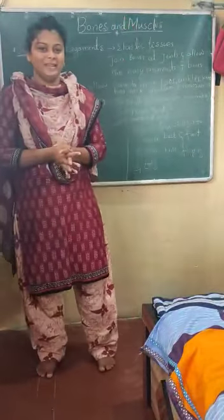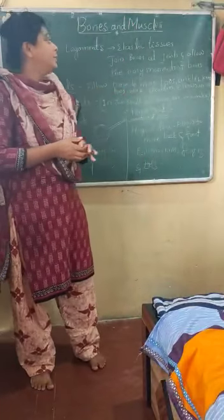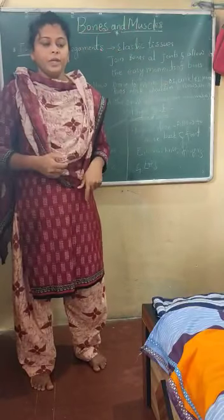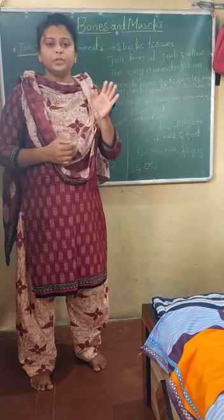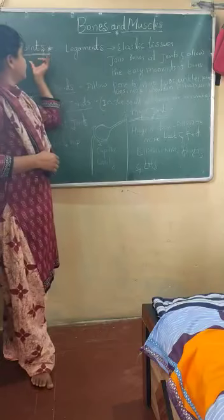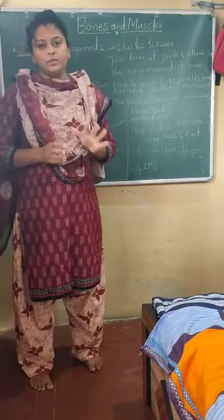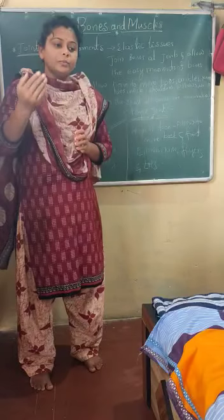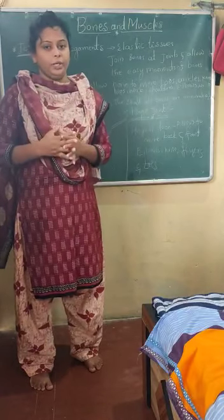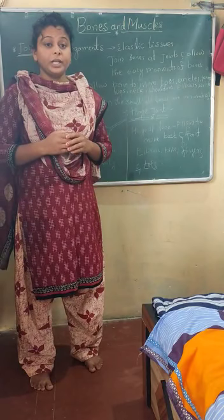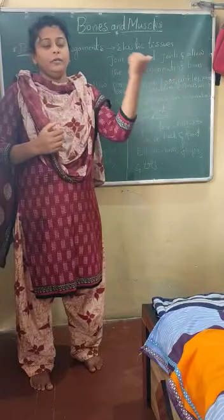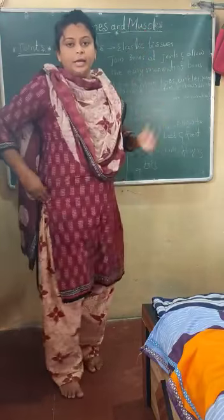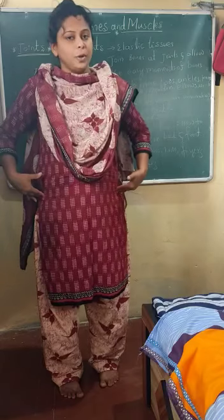Hi children, welcome back. In today's video we are going to discuss the continuation of the last video on the same topic: bones and muscles. In the last video we discussed up to some points, including joints. There are some particular points in our body where two or more bones have joined together. Limbs are areas where we have joints — here, here, and even in the thigh part we have joints.